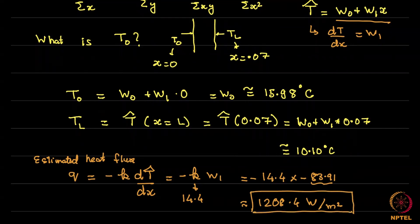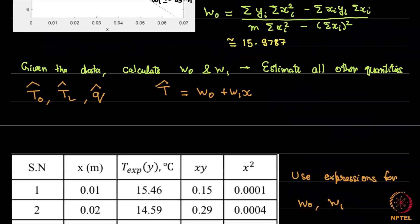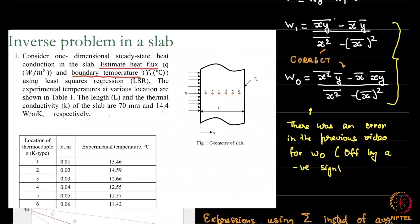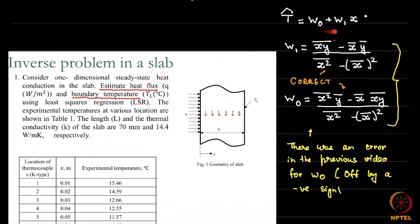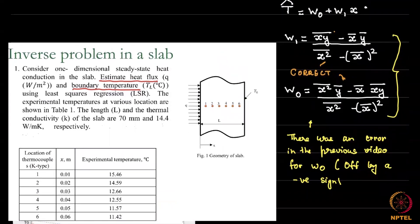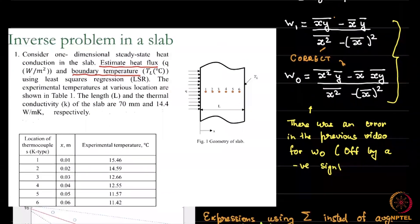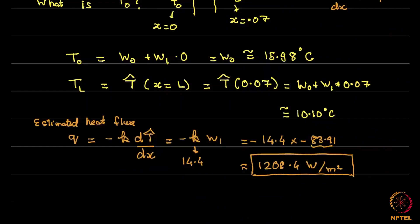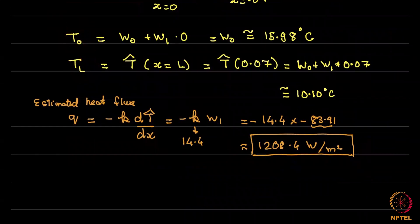This is really a very simple example of how an inverse problem is solved. Just to recapitulate, you were given a series of locations and a series of thermocouples. You basically built a model and said it was linear. Based on that linear model, we found out the best possible coefficients w0 and w1 by solving a linear regression problem. We actually derived the analytical expressions in the last video. Once we derived that, we can now find out the numerical values. Once the numerical values were found, we can now derive the quantities which correspond to the left temperature, right temperature and the estimated heat flux.